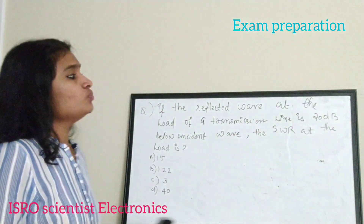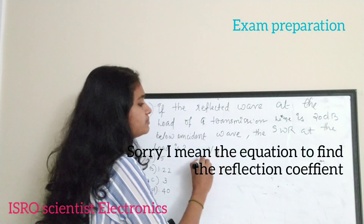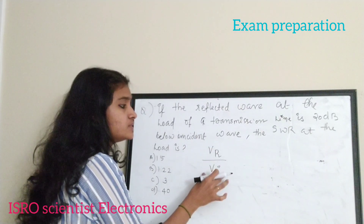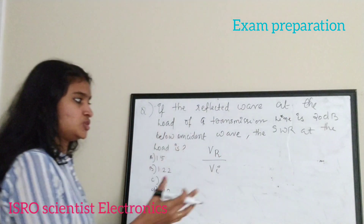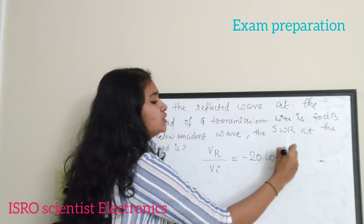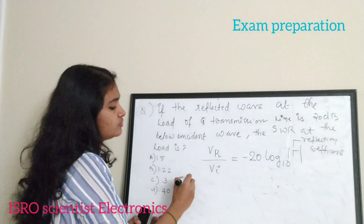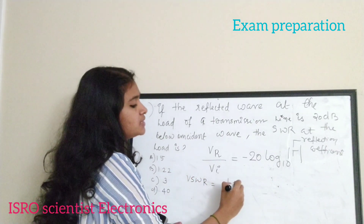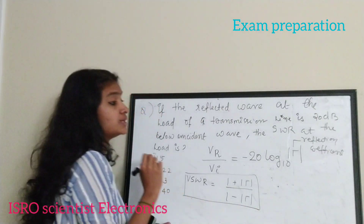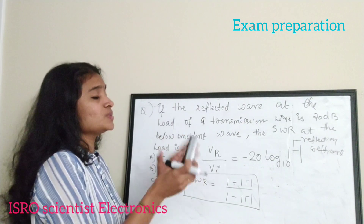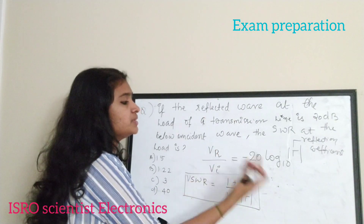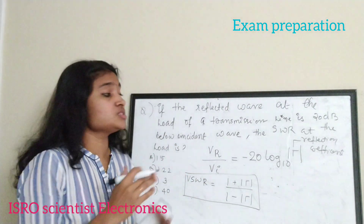For the standing wave ratio, you need to know the equation: VSWR = (1 + |Γ|) / (1 − |Γ|), where Γ is the reflection coefficient. Also, the return loss relation is: −20 log₁₀|Γ| gives the dB level. It is given that the reflected wave is 20 dB below the incident wave, so V_r/V_i can be expressed as −20 dB.